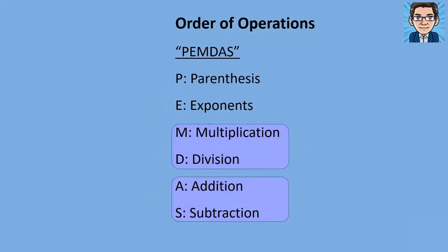We need to remember that even though M is written before D, multiplication and division go together as one level, and addition and subtraction go together as one level.